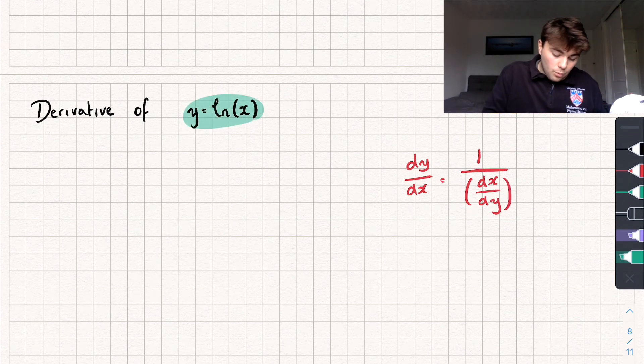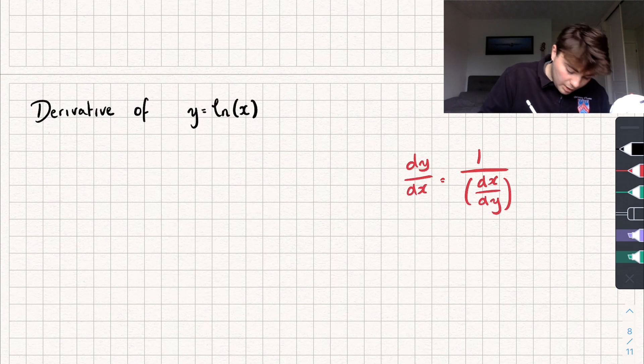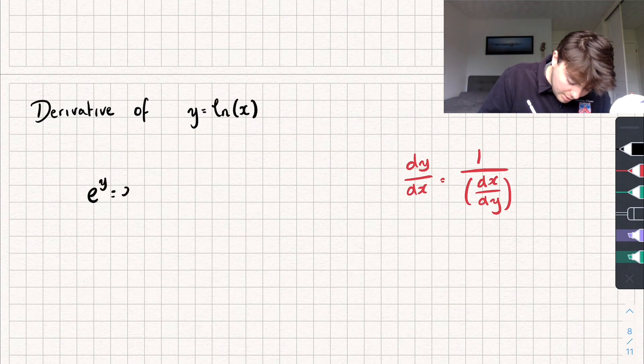So going back to the formula or the equation y equals the natural log of x, I'm going to make both sides of this equation the power of e. And so we're going to get e to the power of y is equal to e to the power of the natural log of x.